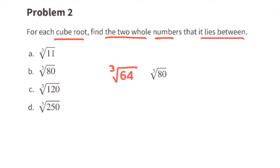Part b: the cube root of 80 lies between the cube root of 64 and the cube root of 125. That's because the cube root of 64 is 4 and the cube root of 125 is 5. That means that some decimal between 4 and 5, multiplied by itself 3 times, equals 80.